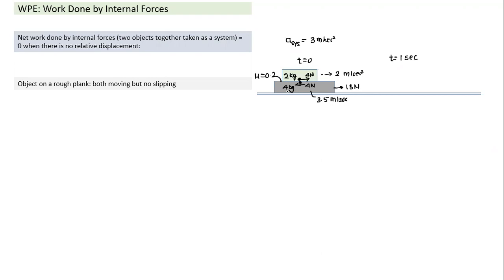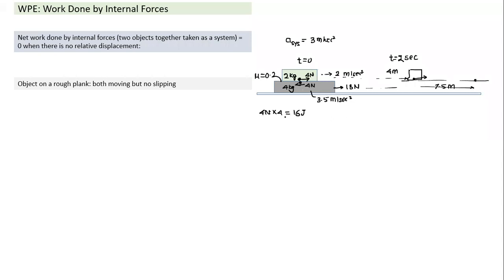In 2 seconds, top block moves 4 m and bottom block moves 7 m (using s = ½at²). Work done by friction on top block: 4 N × 4 m = +16 J. Work done by friction on bottom block: −4 N × 7 m = −28 J. Wait — net work done by internal friction is 16 − 28 = −14 J, which is not zero.